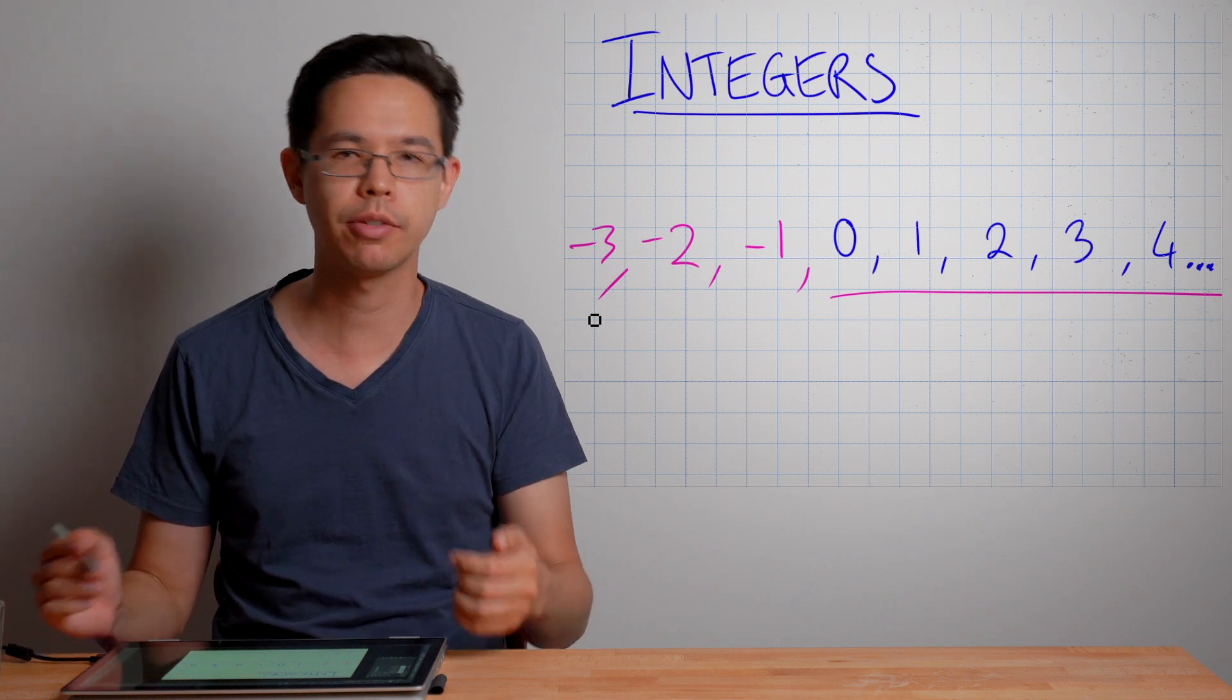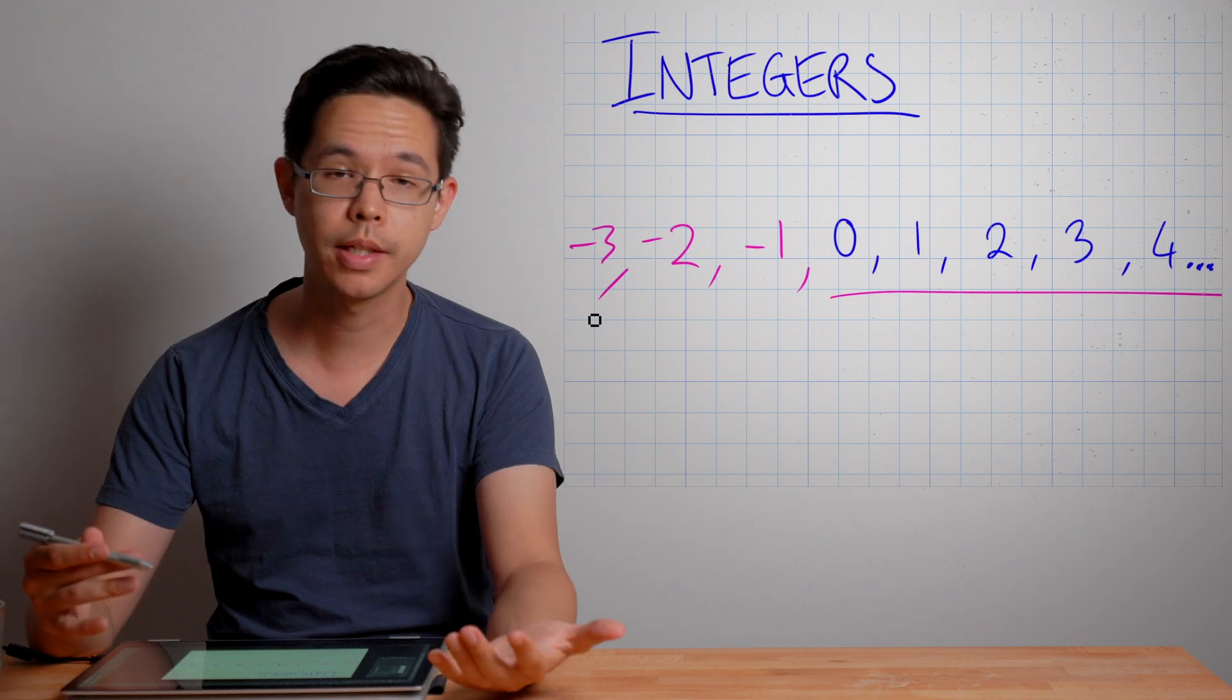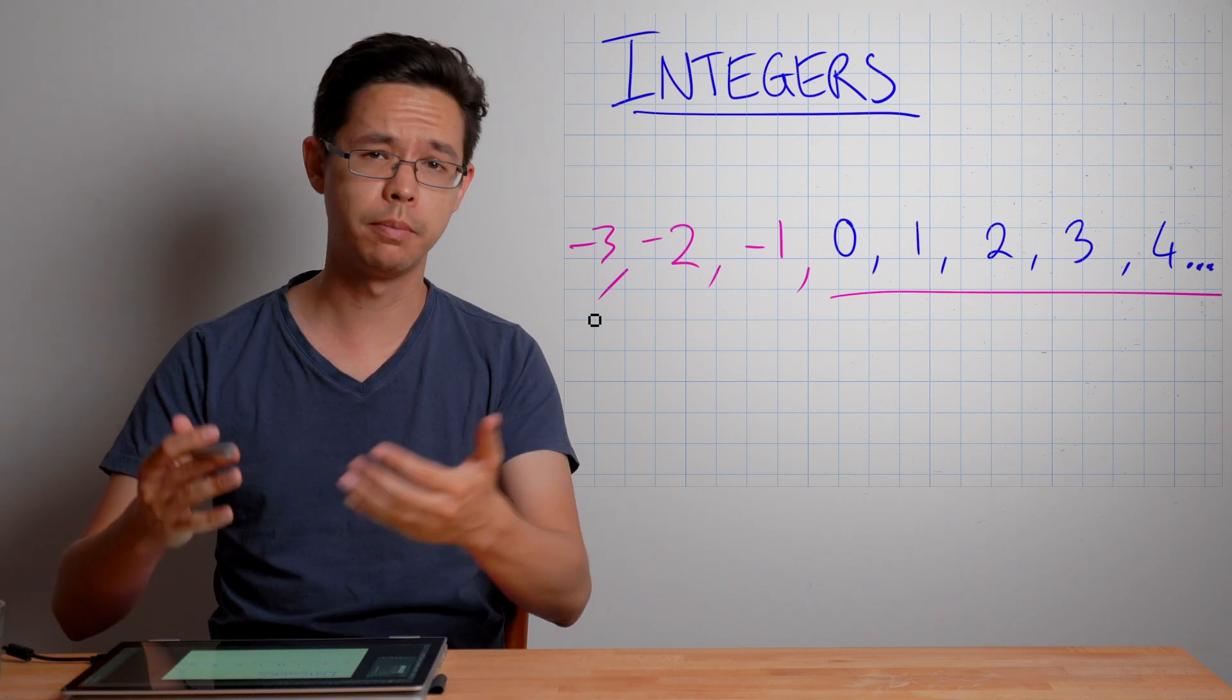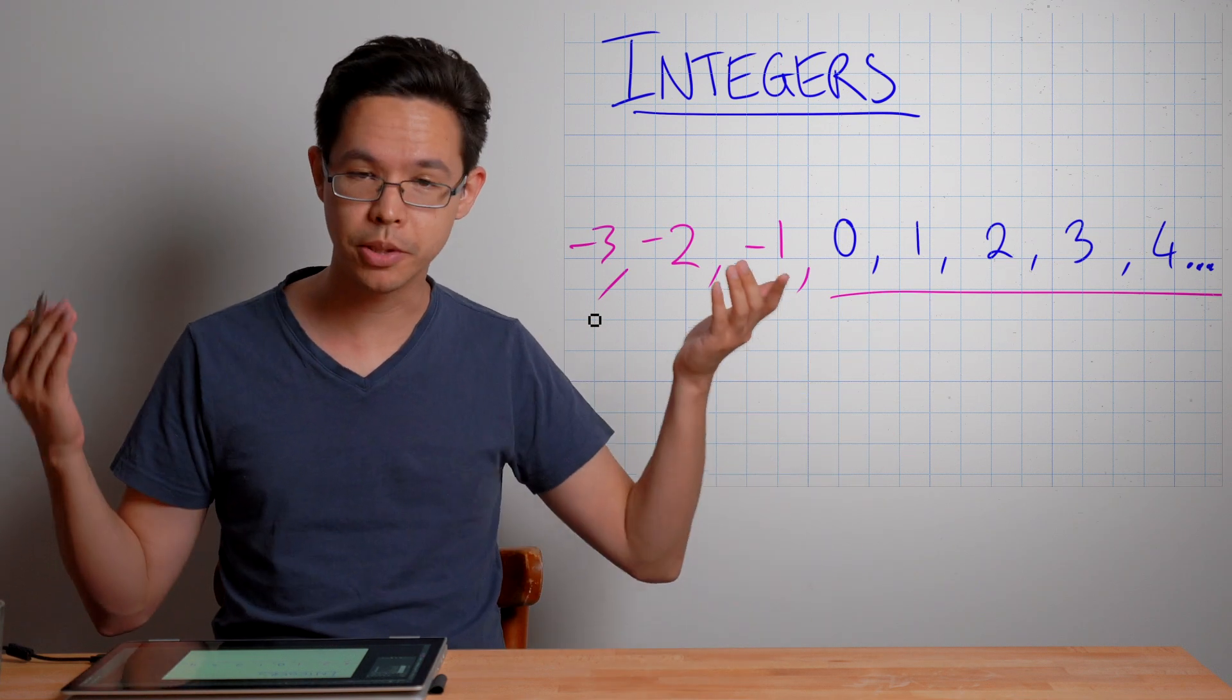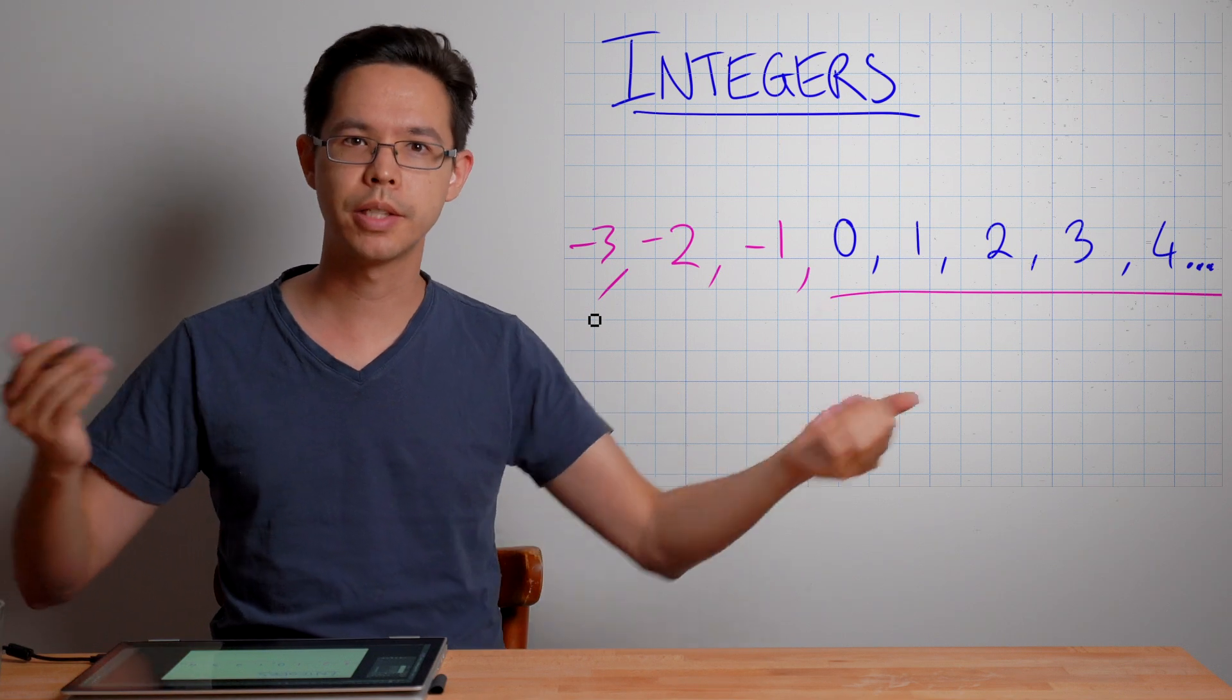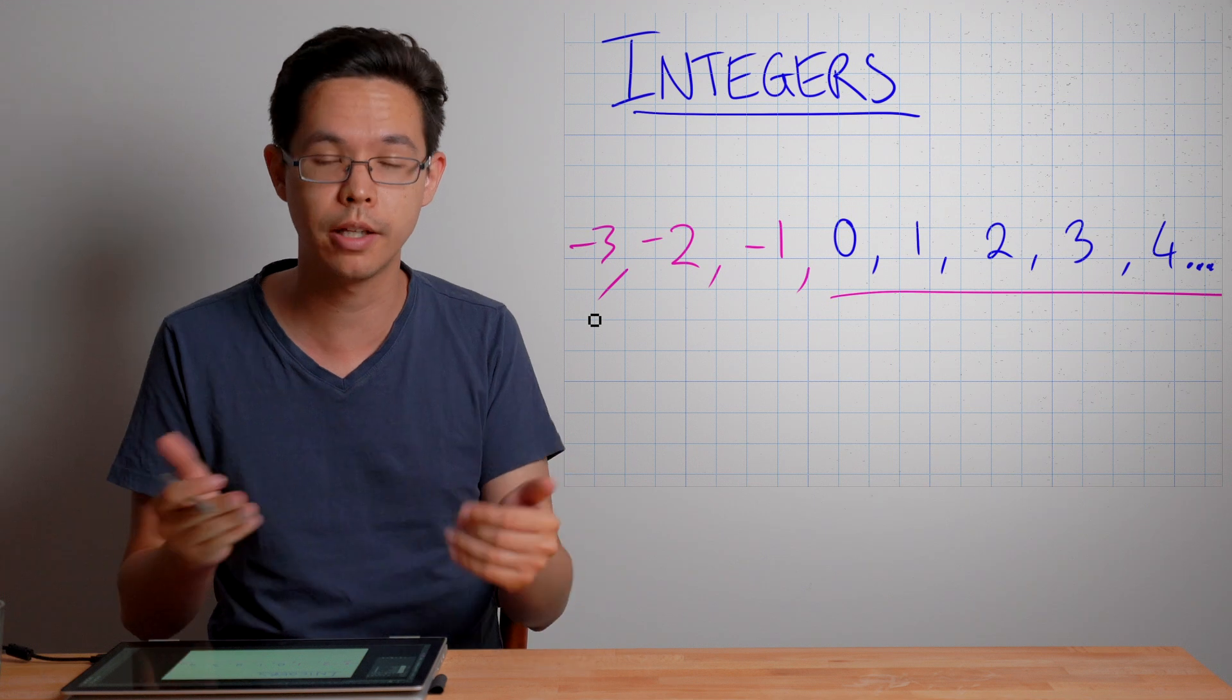So where do we see integers in daily life? Surely you've seen some of them by now. One of the ways you can see a negative show up is on a temperature, like a thermometer, or when we're talking about how cold it is outside. It might be so cold it's below freezing, and we might refer to that as minus five degrees Celsius outside. That's a negative, an integer, a negative value.